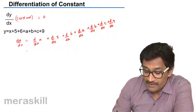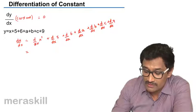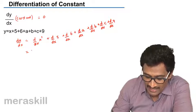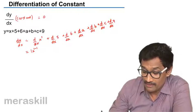dy/dx of x - this is nothing but x raised to 1. So this will turn out to be nx, that is 1 into x raised to 1 minus 1.